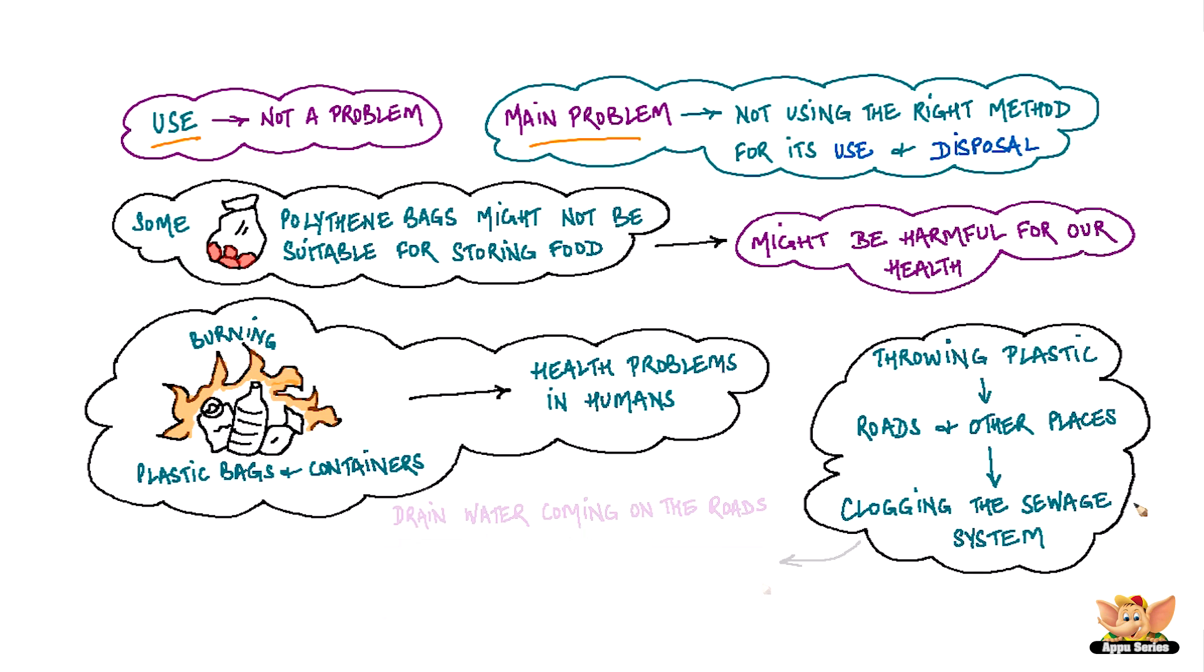This could lead to the drain water coming out into the roads. A little bit of rain could result in flooding in cities, which further brings out the hazards of waterborne diseases.